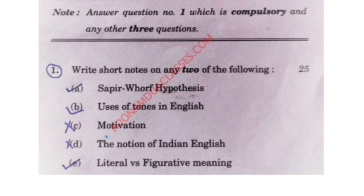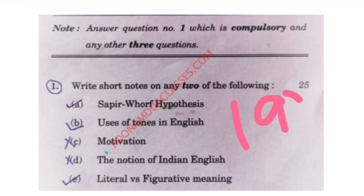This paper had seven questions in total, and one was supposed to attempt any four, with the first being compulsory, and there was internal choice as well. Let us begin with question number one, which gave five options — A, B, C, D, E — and you're supposed to do any two. Let us begin with the first option: the Sapir-Whorf hypothesis. This is a linguistic theory which says that whatever we think is shaped by our concept of language.